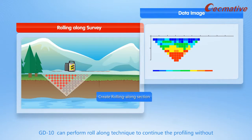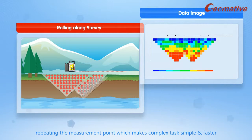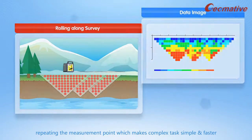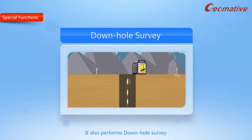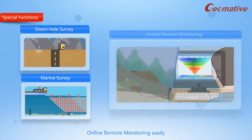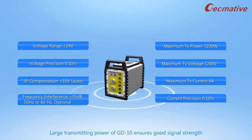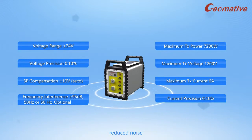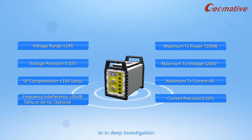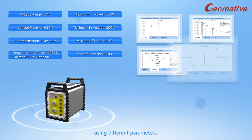GD-10 can perform roll-along technique to continue profiling without repeating the measurement point, which makes complex tasks simple and faster. It also performs down-hole survey, marine survey, and online remote monitoring easily. Large transmitting power of GD-10 ensures good signal strength, deeper penetration, reduced noise, and good precision in weak signal or in deep investigation. It facilitates graphs to access measured data using different parameters.